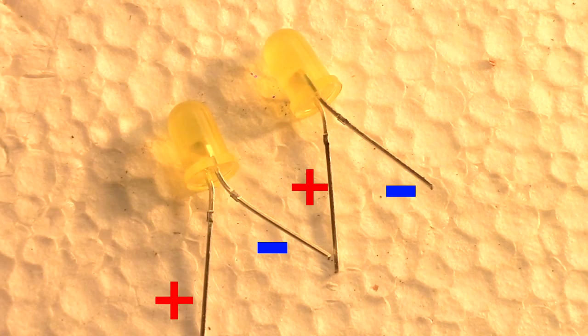Next wire them together in series. Positive, negative, positive, negative. You can simply twist the leads around each other like so to conjoin them.